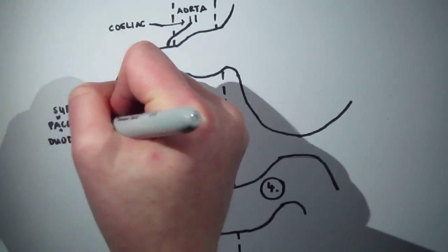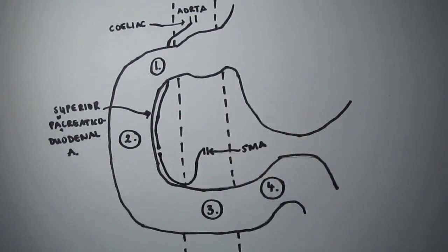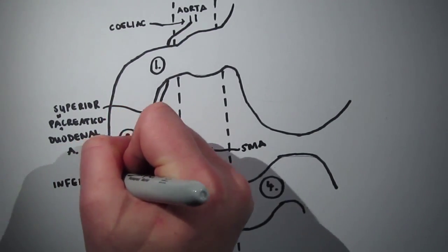The inferior pancreaticoduodenal artery, which comes from the SMA and also splits into anterior and posterior branches, supplies the distal end of the duodenum.